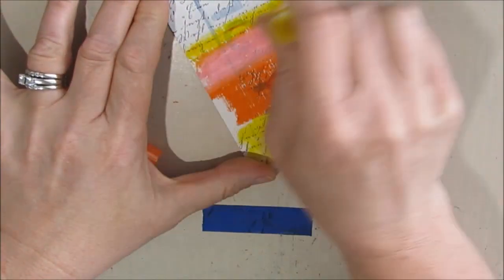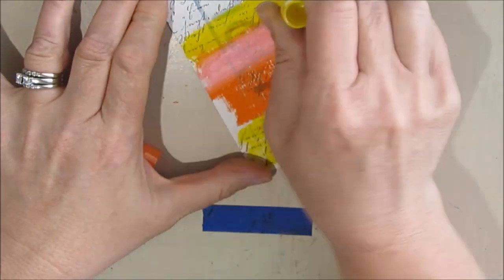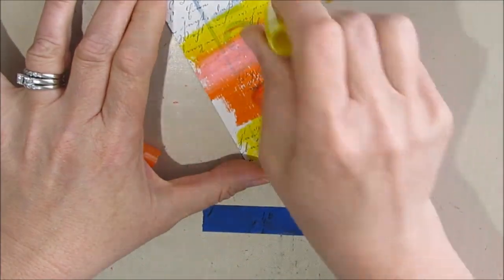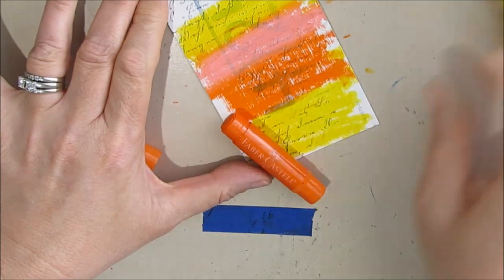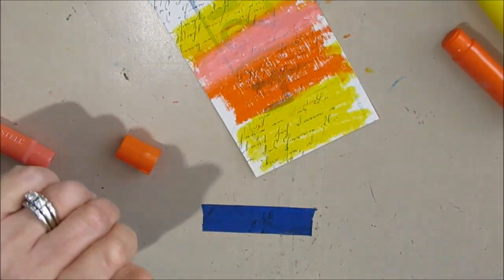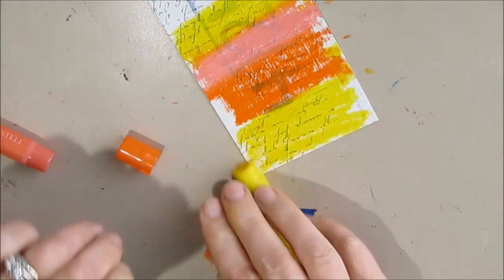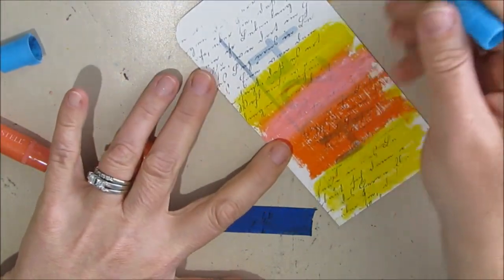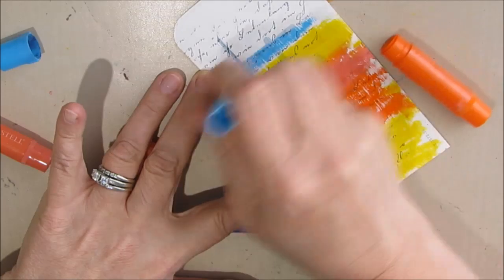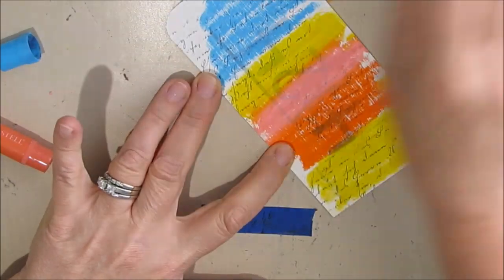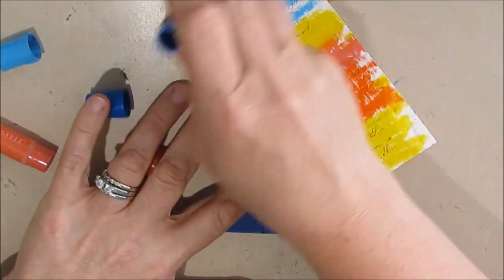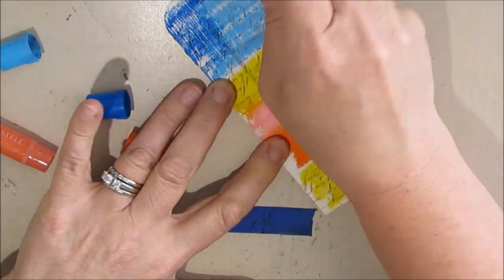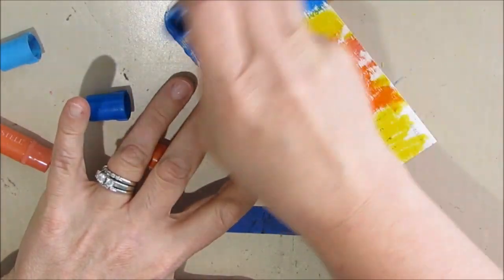Now I looked at some sunrise pictures and pretty much anything goes. There's some that have blue in them and some that are pink and some that are all sorts of things. So I'm just going to go with some of the yellows and the oranges down in the brighter sun and I'm just going to put some blue sky above.